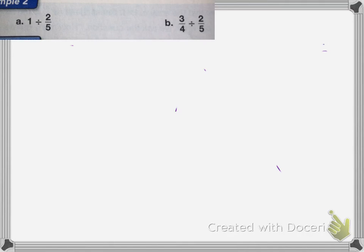This one, again, A, 1 divided by two-fifths, what it's asking is how many two-fifths are there in 1, which, again, is going to be your reciprocal. So the reciprocal of two-fifths is equal to five-halves.